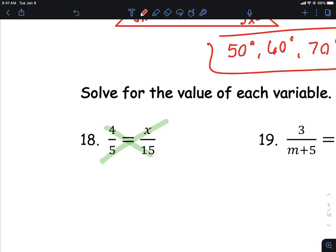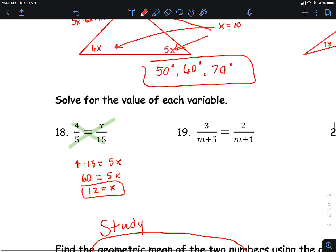So 4 times 15. If you want to just write this out for the first one, you can write that. And then of course 5 times x right there. 4 times 15 is 60, and then equals 5x. And then I guess we can divide. And that's x is 12 right there.